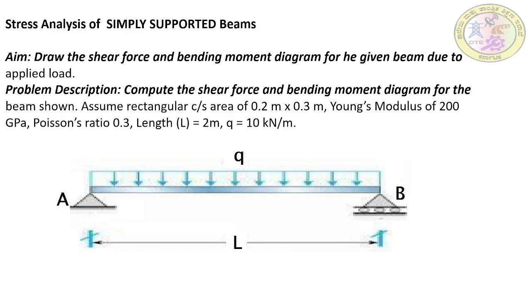Hello everyone and welcome to the ANSYS tutorial. In today's session we are discussing stress analysis of a simply supported beam with a uniformly distributed load (UDL) acting throughout the length of the beam. The problem description is to compute the SFD and BMD for the beam shown. Assume a rectangular cross-section of 0.2 meter by 0.3 meter. Young's modulus is 200 GPa, which is 200×10³ N/mm², and Poisson's ratio is 0.3.